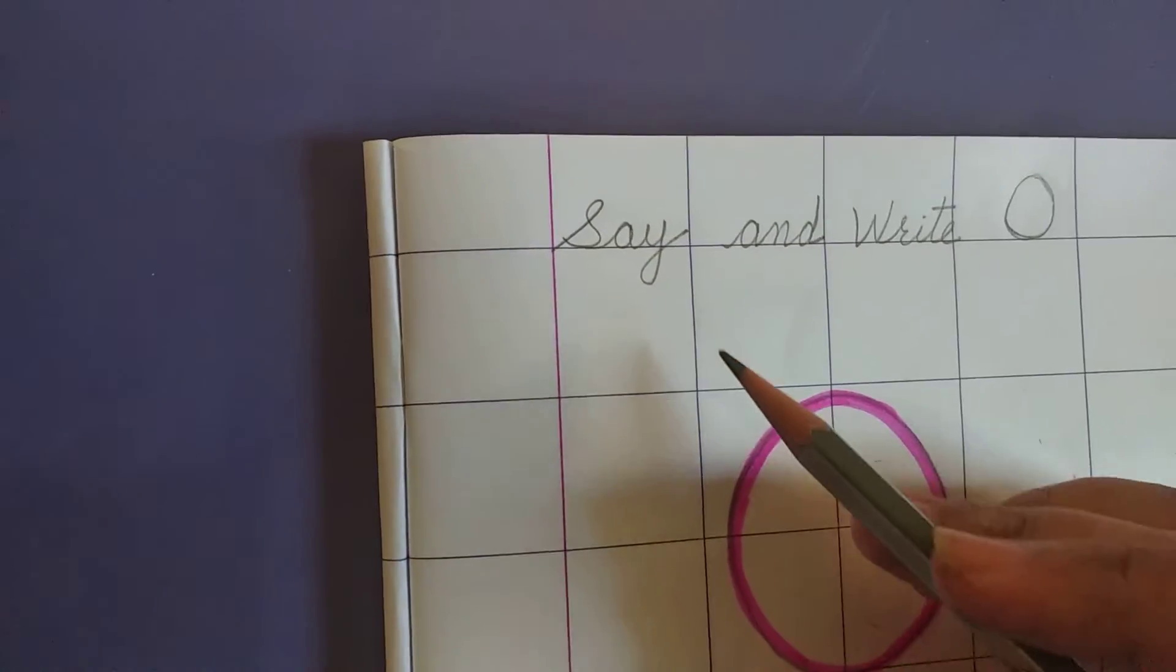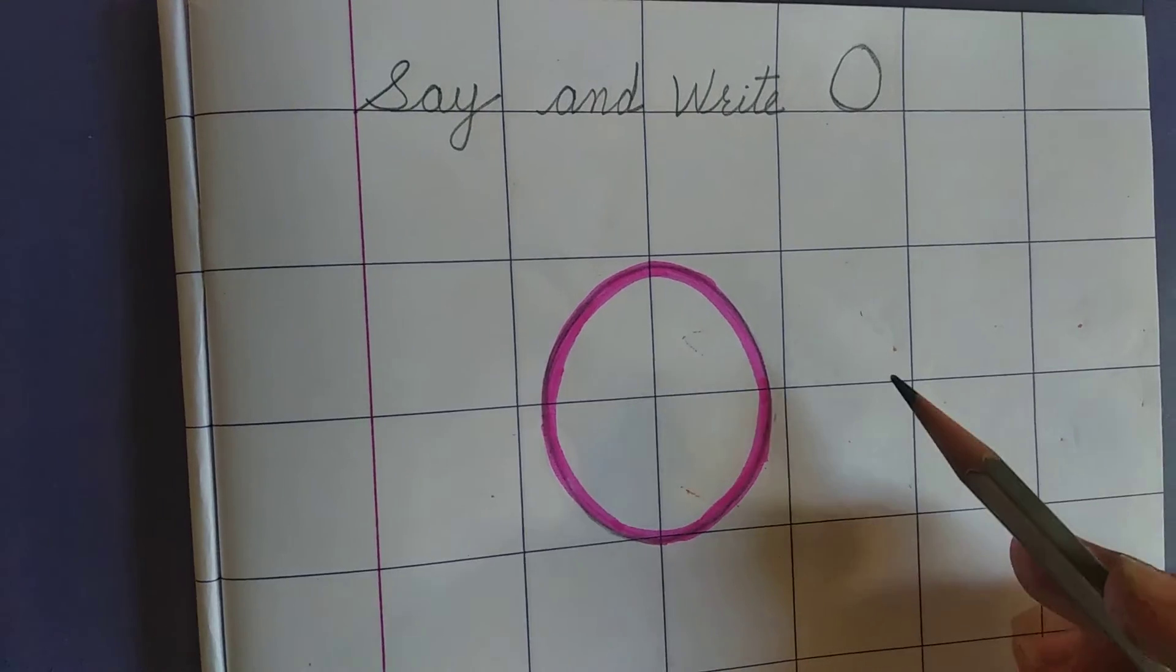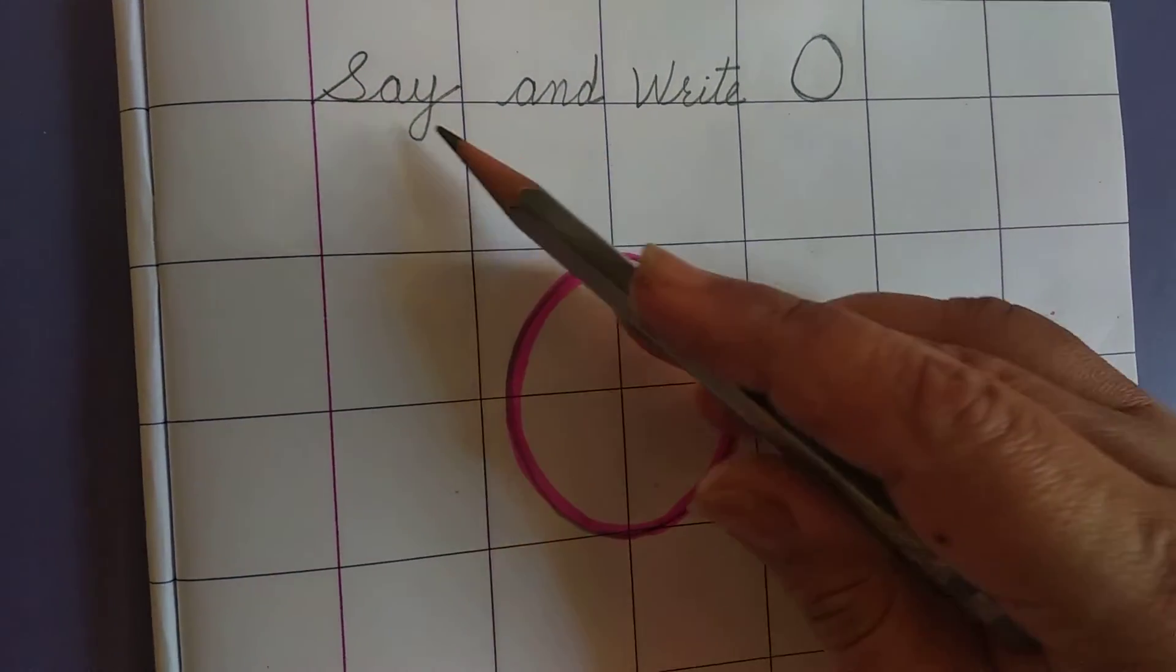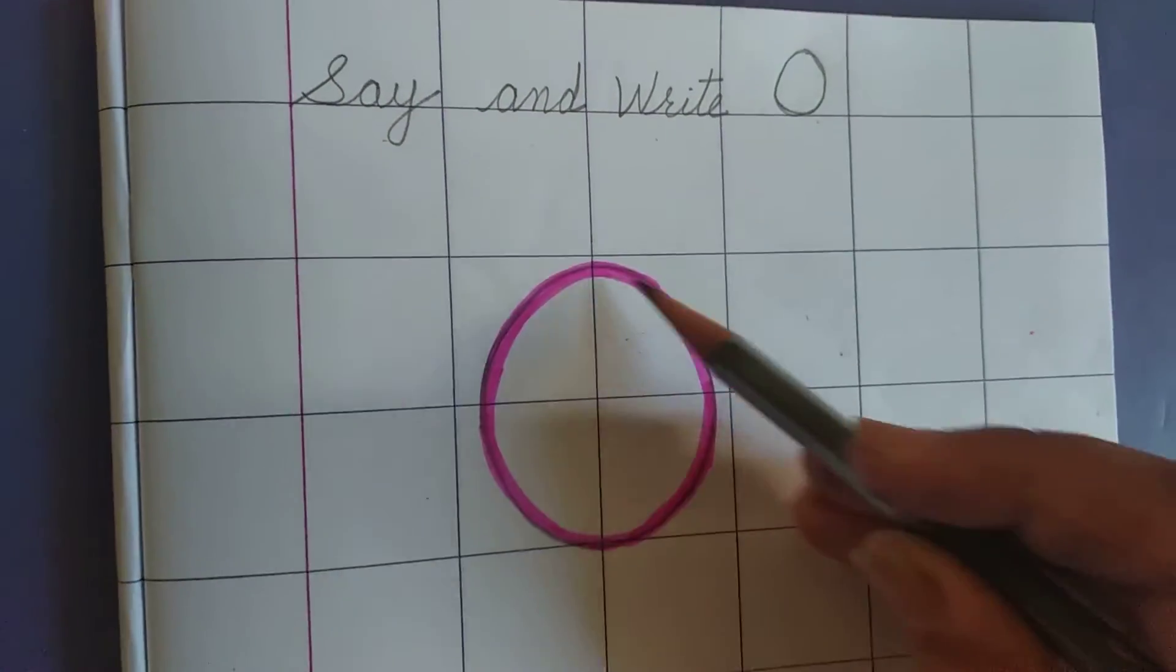Parents, in this type of pattern, make ready in your child's notebook. First heading, say and write 0, 0.